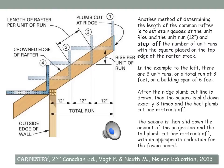Set your stair gauges on your framing square so that one side on the tongue is set at the unit rise, and on the body it's set at 12 inches, which is the unit run. Then you step it off the required number of runs — in this picture it's three runs, meaning the width of the building is six feet. Span equals six feet, run equals three feet, so we have three unit runs. After you draw the plumb line at the top, you slide your square down exactly three times, then strike off the heel plumb cut line. The square is slid down the amount of the projection at the end, and the tail cut line is struck off allowing for the fascia board. This is a fairly accurate way, but you will need a fairly sharp pencil to avoid mistakes.